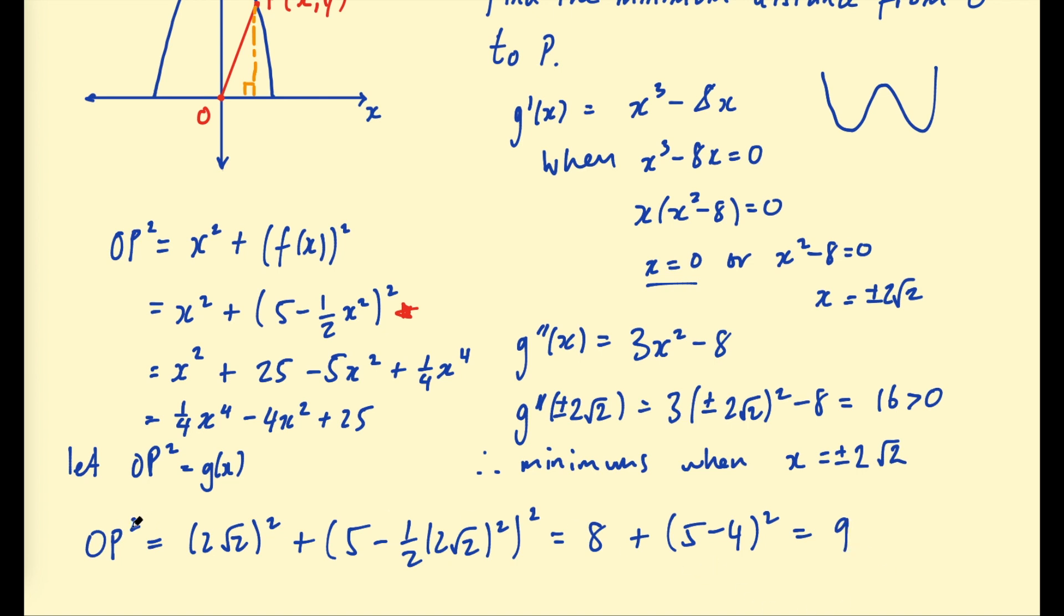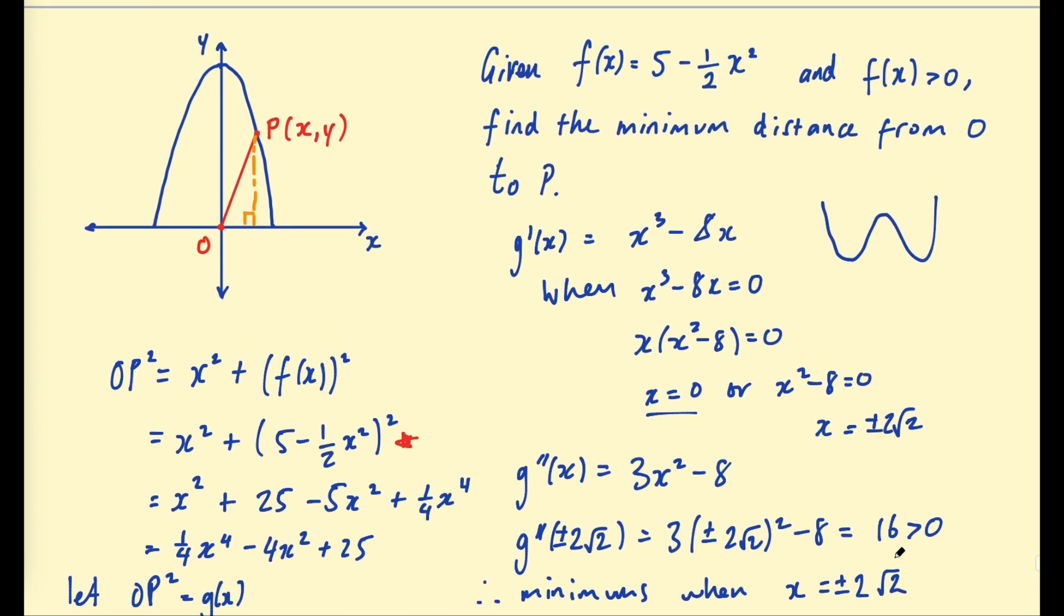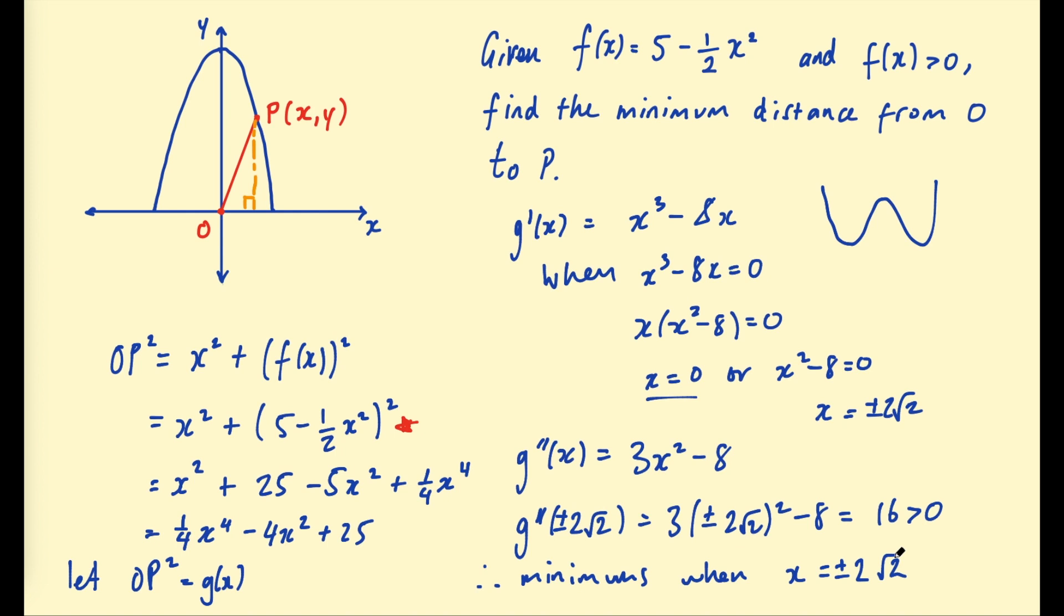And remember that's OP squared. So therefore, if we take the square root, we know OP is equal to 3. And because we're talking about a length, we just take the positive value. So there we go. I hope you found that problem interesting, finding that minimum length to a curve using all of the knowledge we've learnt in this playlist so far. If you found that useful, please leave a like and I'll see you in the next one. Bye for now.